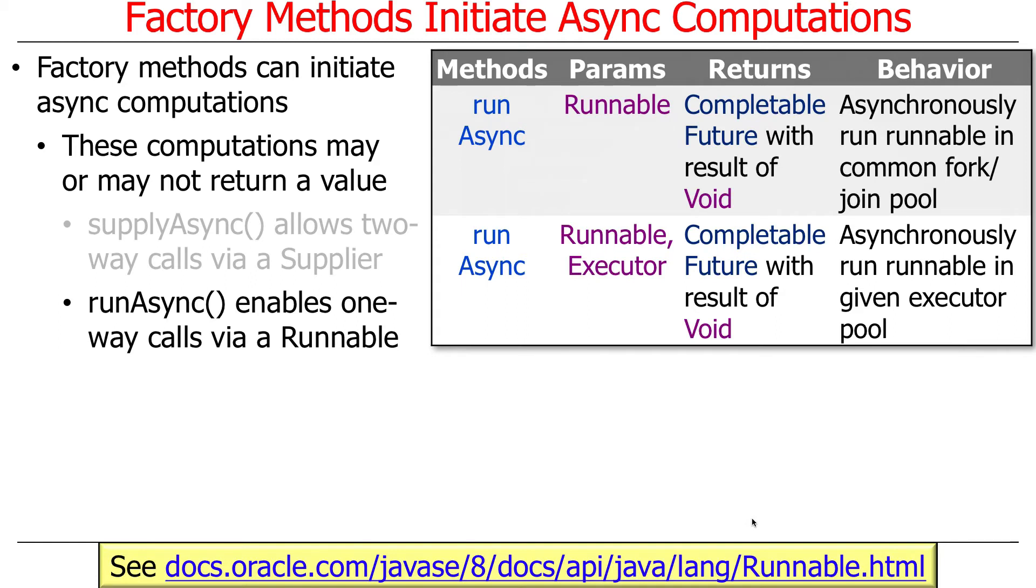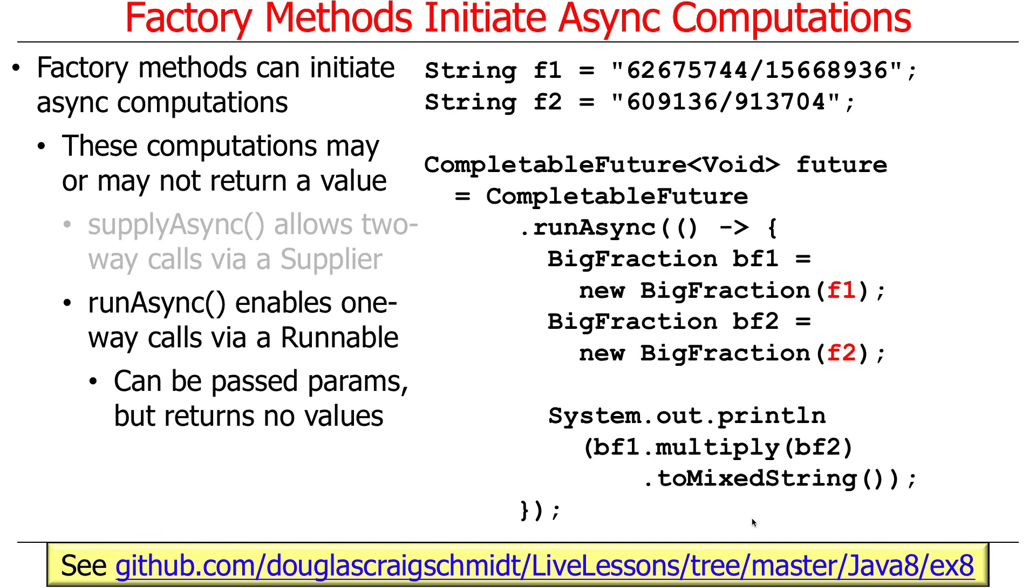The second form, which we're not going to focus on, I'm just telling you about because it's useful to know just to make you a little smarter, is something called run async. This enables one-way calls via runnables. So unlike the two-way calls where you get a result back, the one-way calls just take in something and don't give a result back directly. They have to have some kind of other side effect.